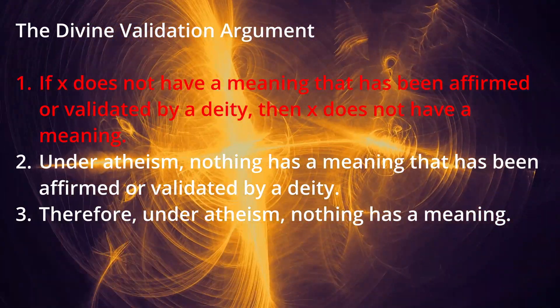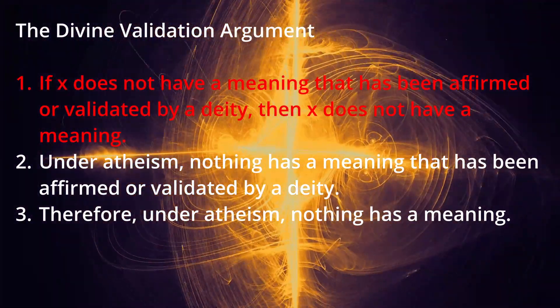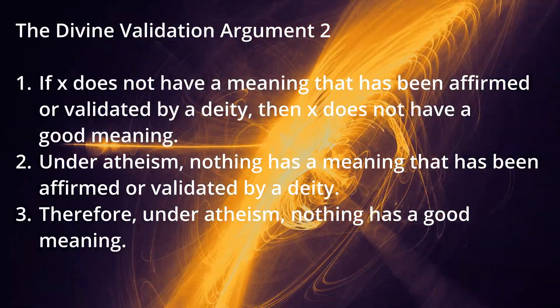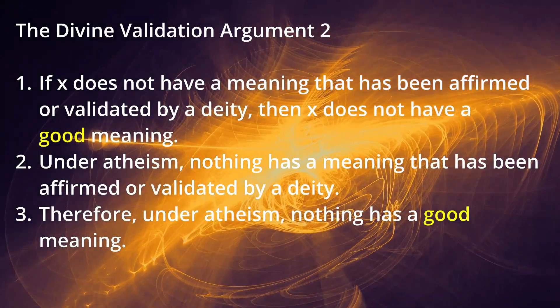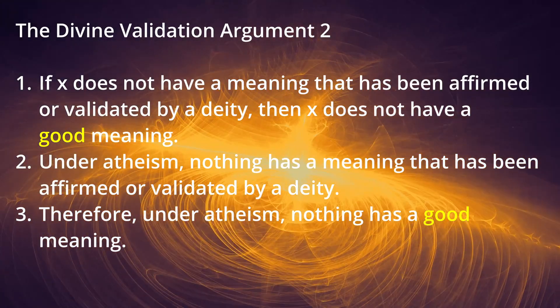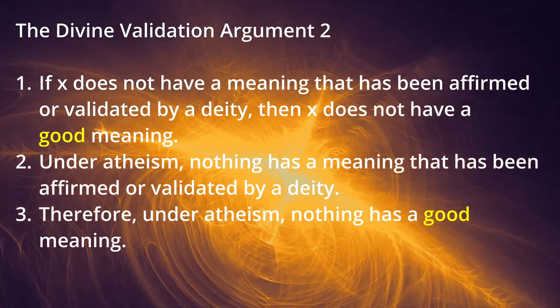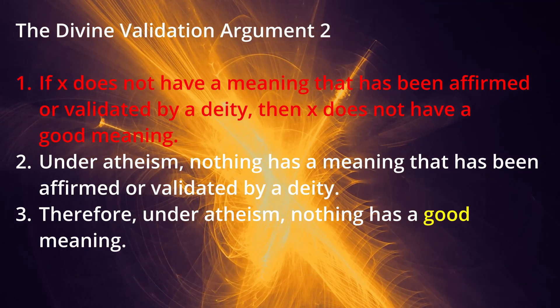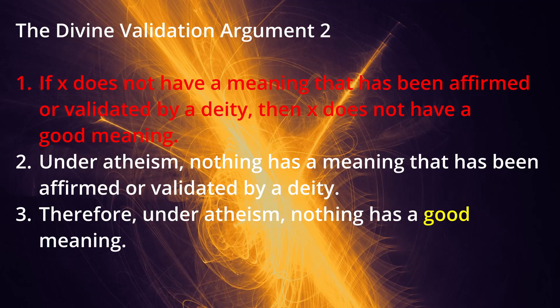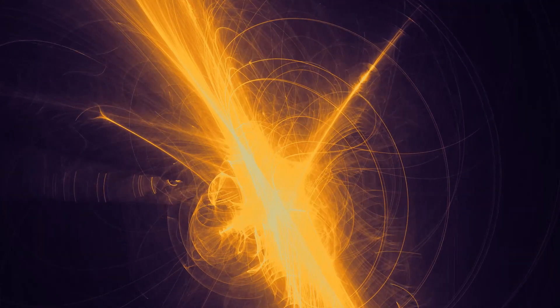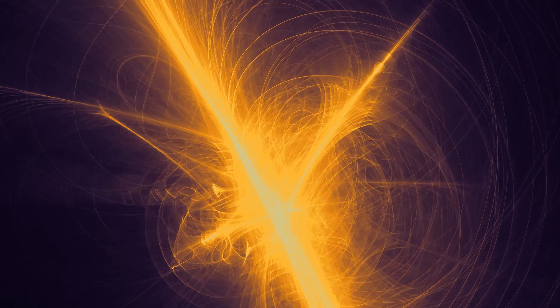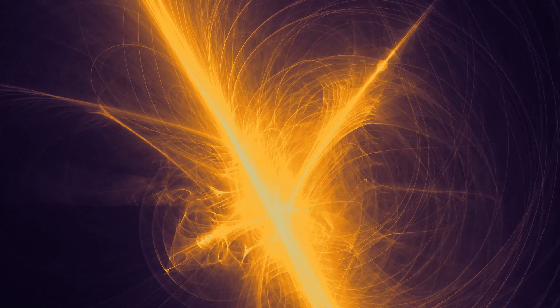At this point, they might try to pivot and say that only meanings which are divinely affirmed or validated are good meanings. And if they're not divinely validated, they're bad. The question then becomes, what does it mean for a meaning to be good or bad? And this will force the apologist to go back to one of the earlier definitions of what a meaning is, such as being eternal or being validated by a deity. But just as there's no reason to think that meaning must be eternal or divinely validated, there's no reason to think that good meaning must be eternal or divinely validated.